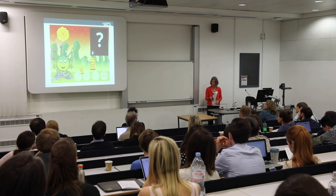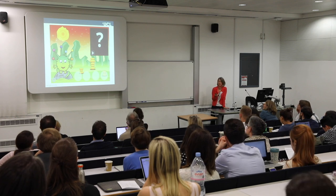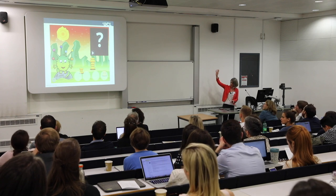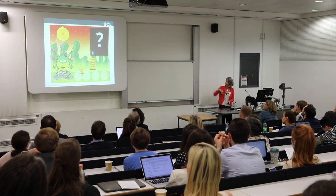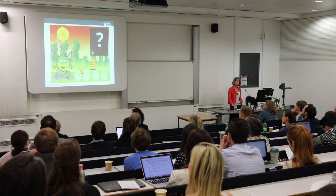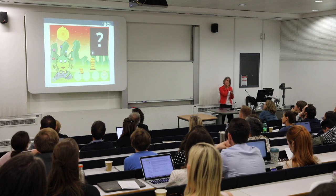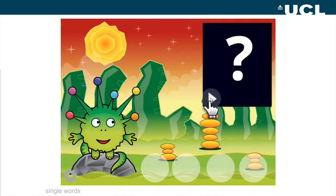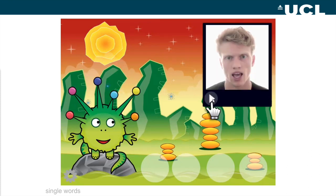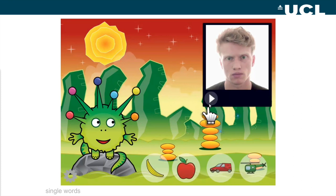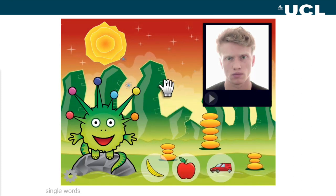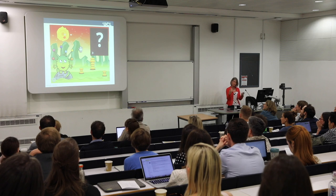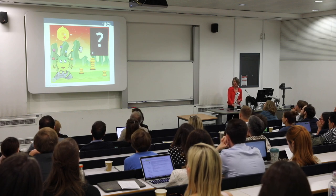Let's see how good your lip reading skills are. You're going to see somebody in the top right corner say a word, then choose from the options at the bottom. This is a very easy one — easy based on how easy the word is to lip read and the competitors shown. Helicopter has lots of syllables and not many competitors. Then here's a more difficult one with more competitors.